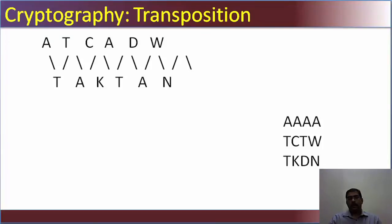Let us see what is a transposition cipher, using the same message 'attack at dawn.' If the position of the letters is changed, and if you see on the right-hand side of the screen — '4s,' 'tctw,' 'tkdn' — there is a method of reading this. In a predefined manner, you read top-down from the first row, first column onwards.